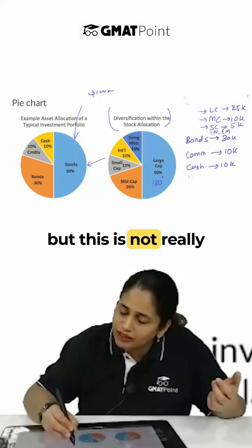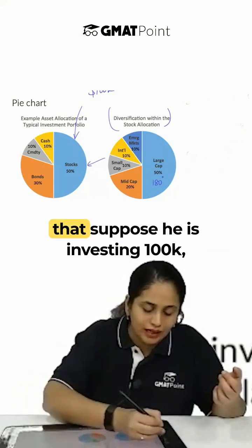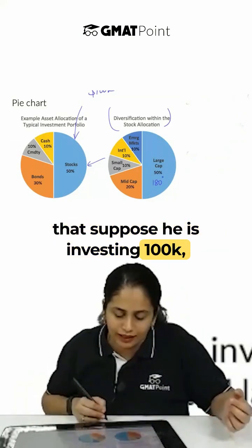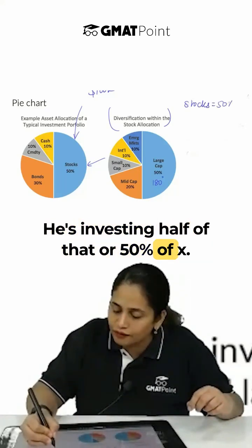I can make this entire table but this is not really needed at all because what I can instead do is suppose he is investing 100k. How much is he investing in stocks?